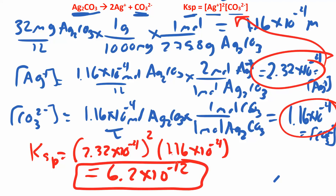That was the long way — I'll show you the shortcut in the next video. To summarize: find the molar solubility by converting milligrams per liter to grams, then to moles using molar mass. Sometimes they give you moles per liter to start, which is easier. Then use stoichiometry to find the molar concentration of each ion. Once you have those concentrations in one liter, plug them into your Ksp expression and you're done.